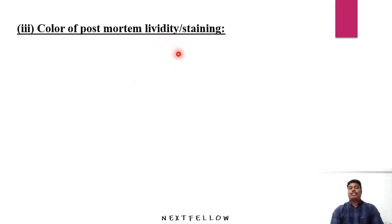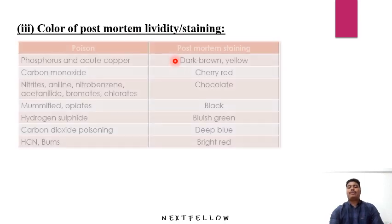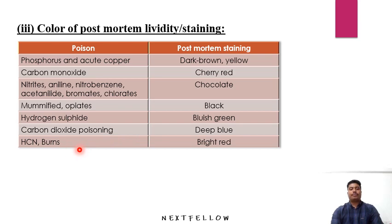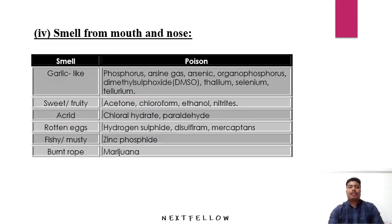Post-mortem lividity color varies with poison and is a common MCQ topic. In carbon monoxide poisoning it is cherry red. In phosphorus and acute copper poisoning it is dark brown. In nitrites, aniline, nitrobenzene, acid anilide, bromates, and chlorates it is chocolate colored. In opiates the staining is usually black. In hydrogen sulfide it is bluish green. In carbon dioxide poisoning it is deep blue due to deoxygenation of blood. In hydrogen cyanide poisoning or burns it is bright red.